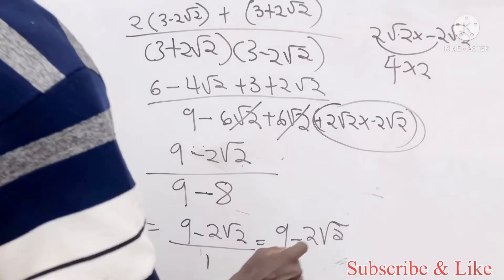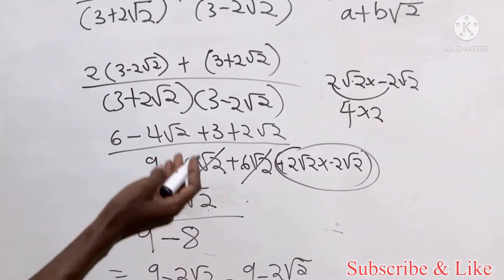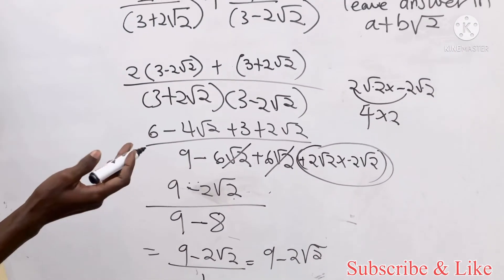So the final answer becomes nine minus two root two all over one, which is the same as nine minus two root two. This is the solution to the question in June 2011.